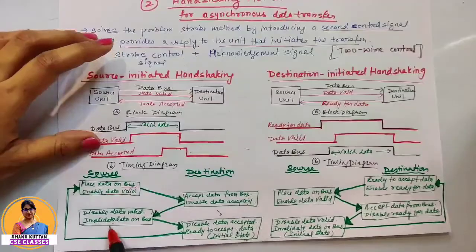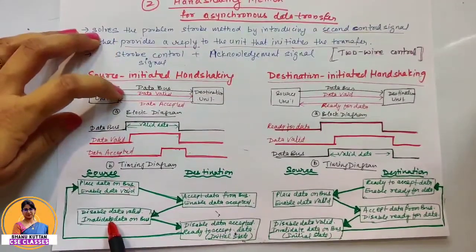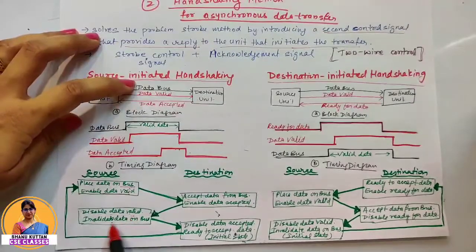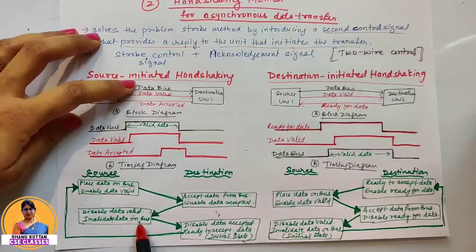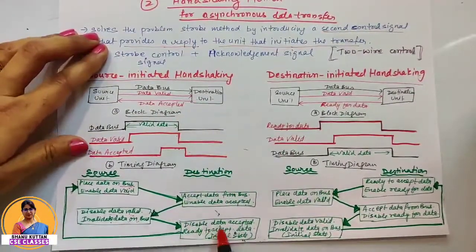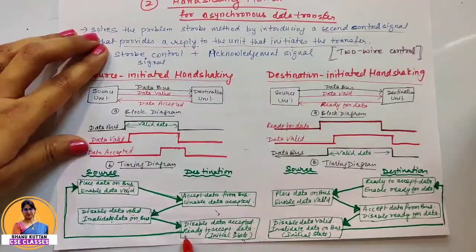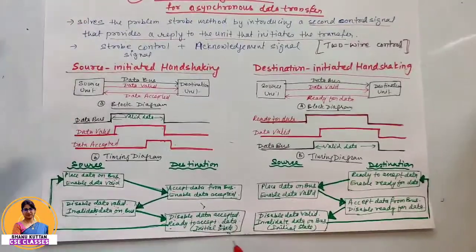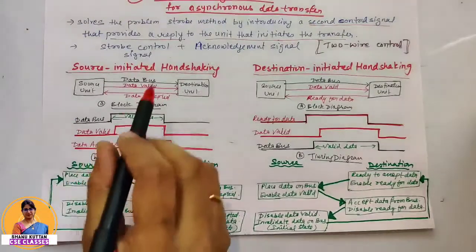In summary for source initiated handshaking: the source places data on the bus and enables the data valid signal. The destination accepts data from the bus and enables the data accepted signal. The source then disables the data valid signal, invalidating the bus data. The destination disables the data accepted signal, and the system returns to its initial state, ready to accept data.